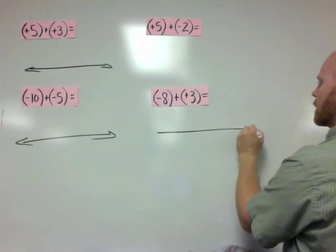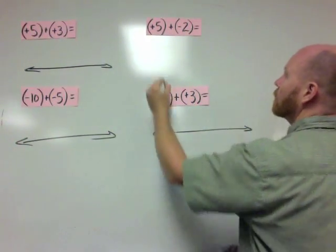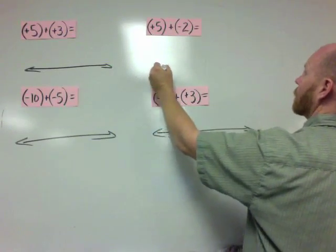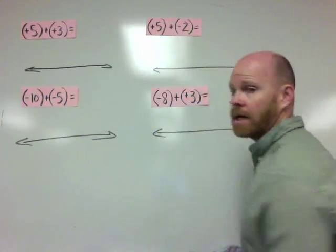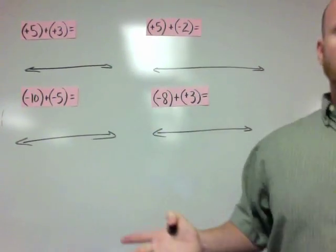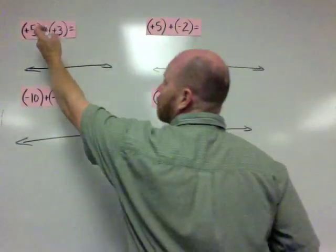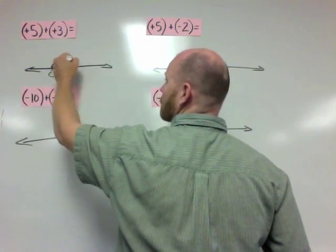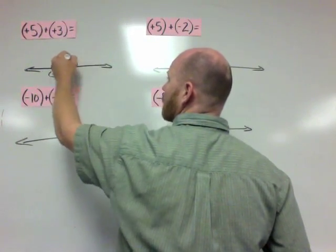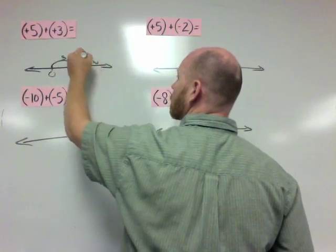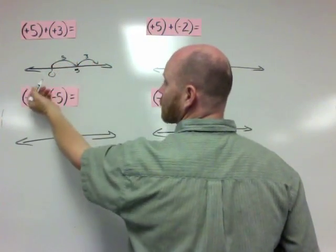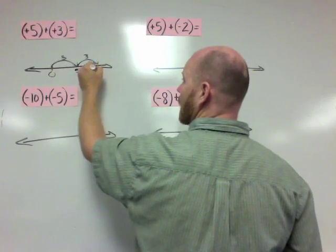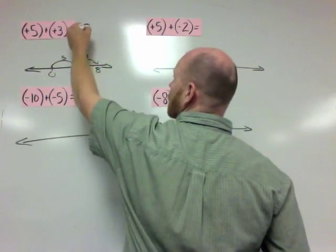We need to make sure we agree on the answers, otherwise there's no way we're going to find a pattern. So positive 5 plus positive 3 means a hop to the right of 5, then a hop to the right of 3. The first hop puts us at 5, the second hop puts us at 8, so the answer is 8.